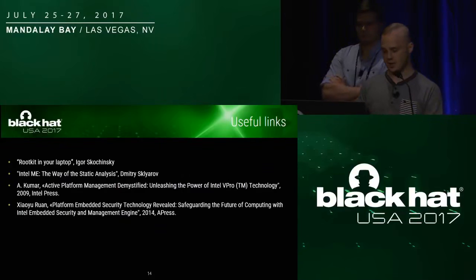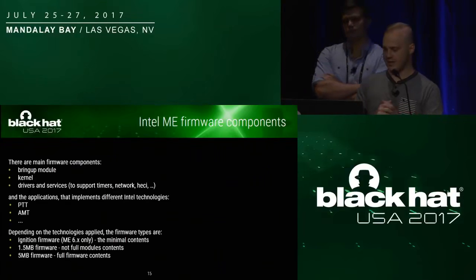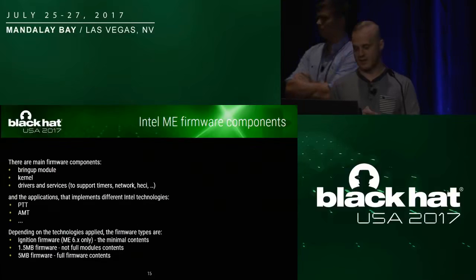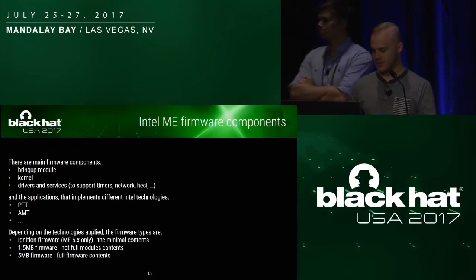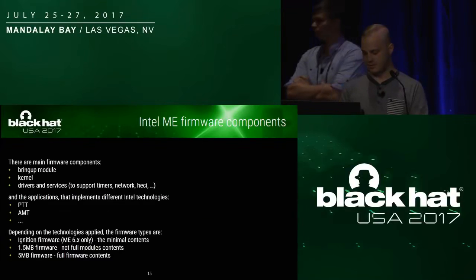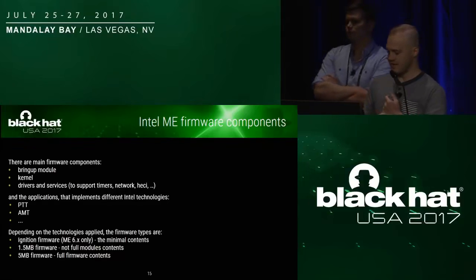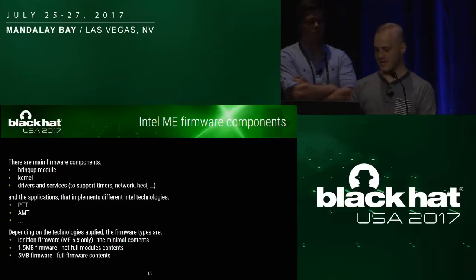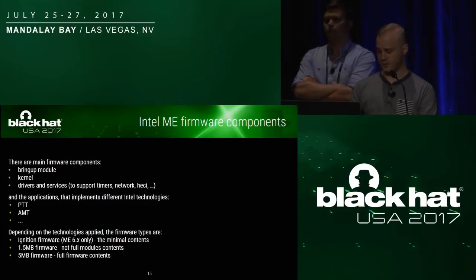Now, on to the Intel ME firmware components. To understand this segment of the presentation, we needed to provide some basics of the ME firmware architecture. The code is divided into modules, and depending on the system, the code module list varies. There are basic code modules such as bring-up and kernel modules in every firmware version. Each module implements a specific Intel technology, for example, Intel AMT. There are three firmware types: ignition firmware, only available for ME version 6 with minimal size; the 1.5 megabyte firmware with incomplete module contents; and the 5 megabyte firmware with full contents.